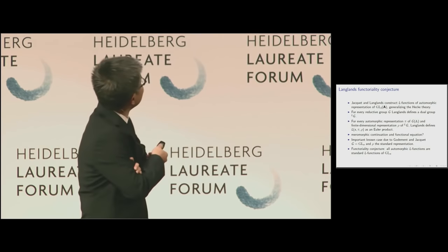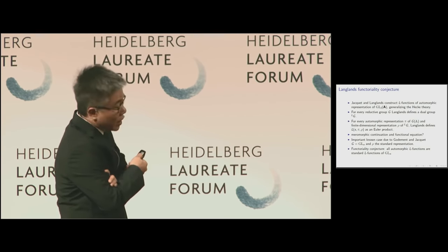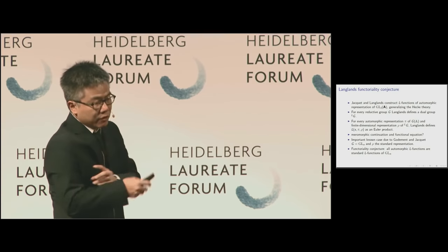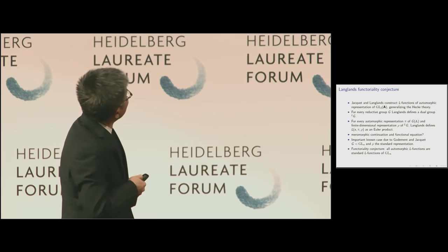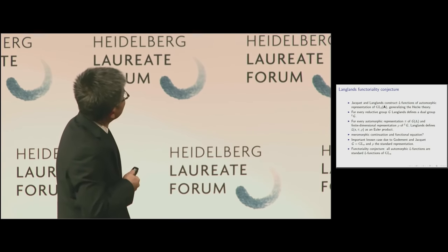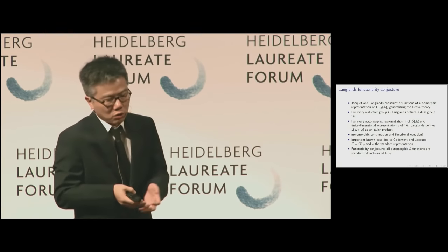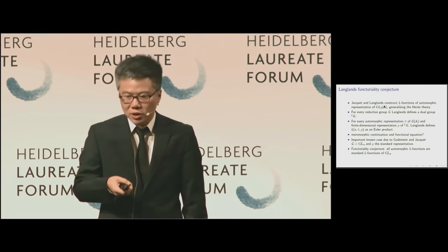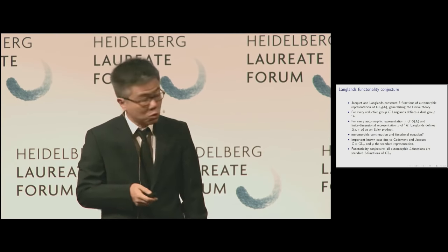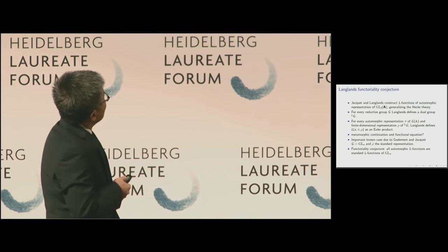In particular, we are trying to generalize the Godement-Jacquet method from the standard representation to any automorphic representation. It's quite challenging, but maybe doable. So that is one facet of the Langlands conjecture: you have automorphic forms on reductive groups, a notion of L-functions, and the fundamental conjecture of functoriality says you don't get more than the standard L-functions.